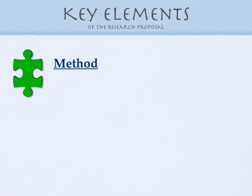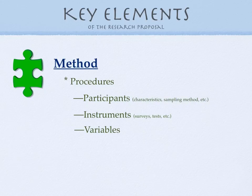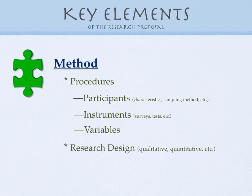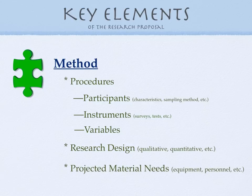So now that we have the introduction complete, it's time to move on to the methods. This is the 'how' of your proposal, so you want to include a lot of detail here. Start with the procedures: list the participants, maybe some characteristics, how you found them, the sampling method. What kind of instruments you might be using, whether it's surveys, tests, or other information. You could talk about the variables that you're looking at. Make sure we know what research design you are using — qualitative, quantitative, or quasi-experimental. You may also include a projected materials needs list: what kind of equipment or personnel you'll need to conduct this study.